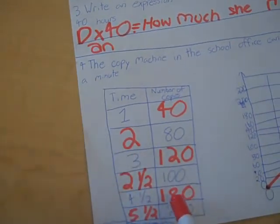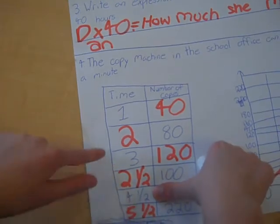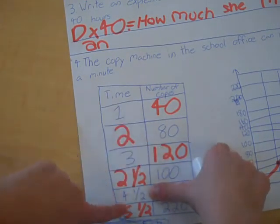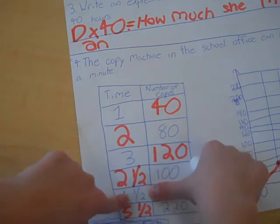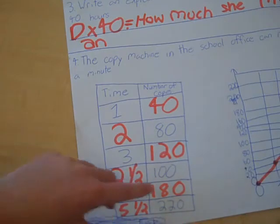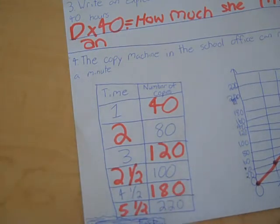And then 180, we know that this would be 4.5 because 3 is 120, so 4 would be 180 and 60, but you need to add the extra 20, so you get 180.